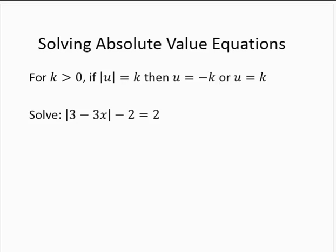In this example, we have the absolute value of 3 minus 3x, subtract 2, is equal to 2. The first thing I'm going to do is add 2 to both sides. That will put the equation in a form more like what we are used to. So the absolute value of 3 minus 3x is equal to 4.